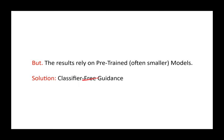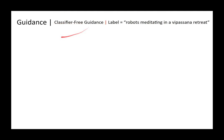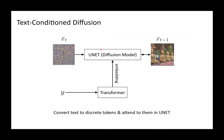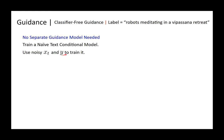What we want instead is classifier-free guidance — a technique requiring no pre-trained classifier. Rather than training a separate guidance model, we train a naive text-conditional diffusion model. The trick is: during training, sometimes you don't pass the label, setting it to null. This forces the diffusion model to learn realism — it learns to generate realistic photos both with and without the text condition y.